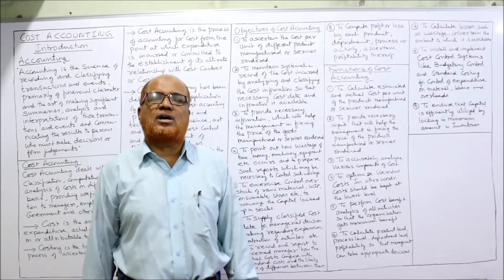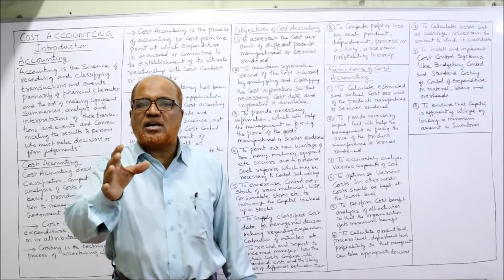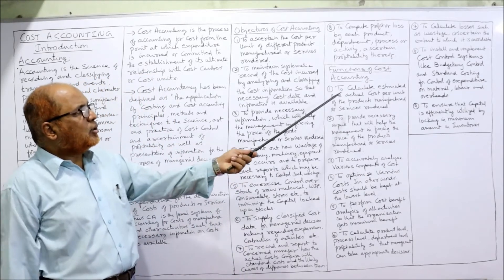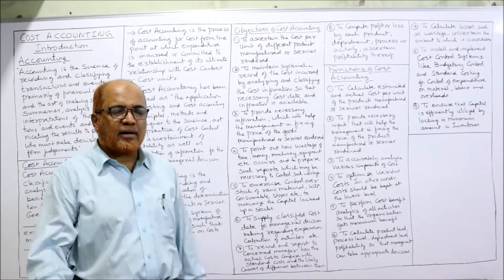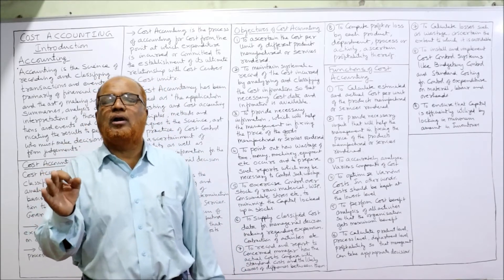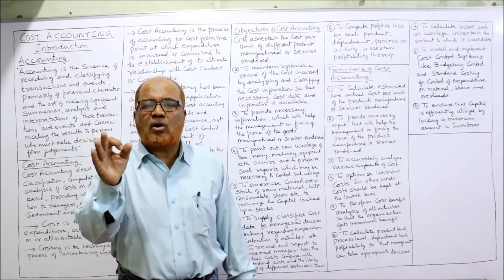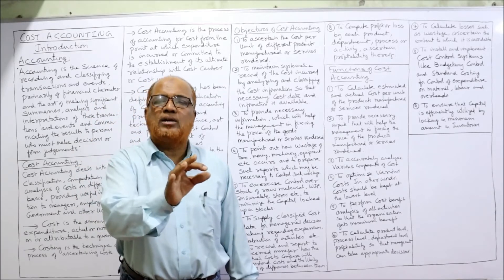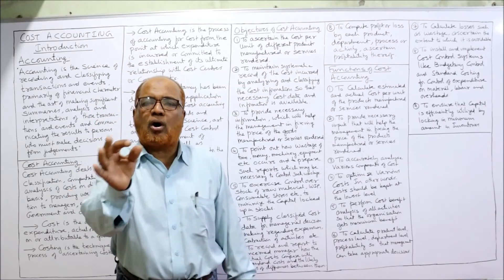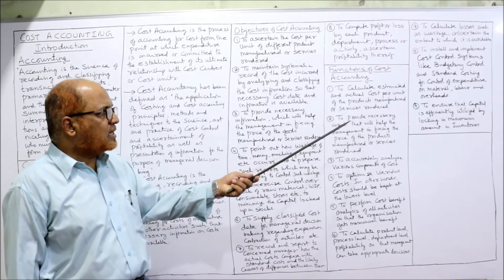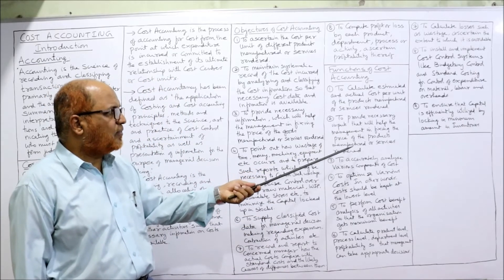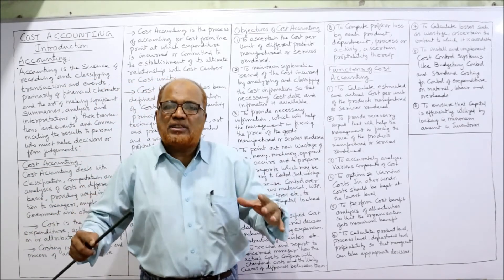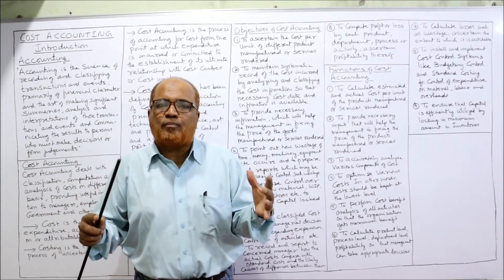Now I'm going to explain the functions of cost accounting — what functions the cost accounting department will perform. First, to calculate estimated and actual cost per unit of the product manufactured. It is a function of cost accounting to ascertain what is the cost per unit of goods produced or services provided. Second, to provide necessary input to help management in fixing the selling price — without having the cost of production, management cannot fix the selling price.